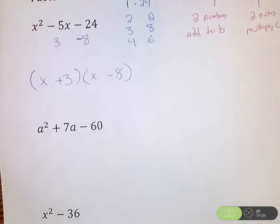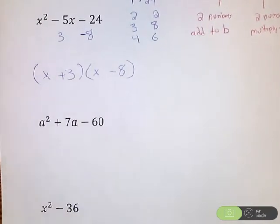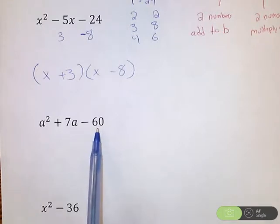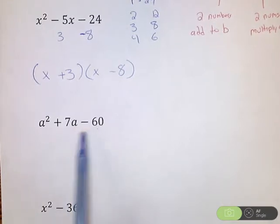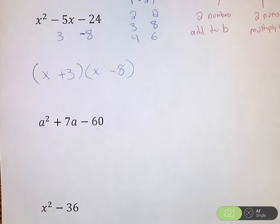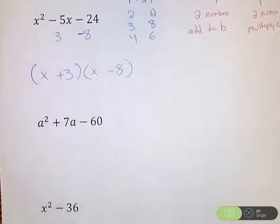So a few more examples here. Here I have a squared plus 7a minus 60. So I'm looking for two numbers that multiply to negative 60. Those same two numbers need to add to 7. So it's not exactly obvious to me. So what I'm going to do is start writing out pairs of numbers that multiply to 60.